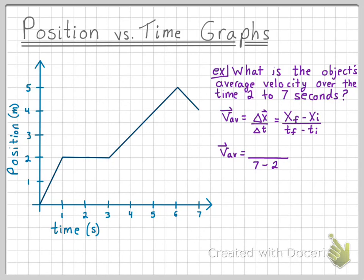Let's look to see what position the object is at at time equals 7. To do this, we simply look at our graph, and we see that at time equals 7, we have a position of 4. So we can fill in that value.